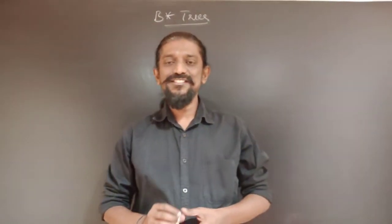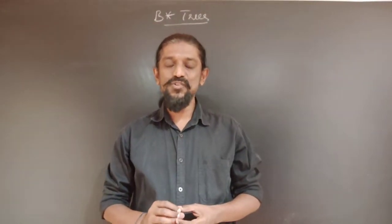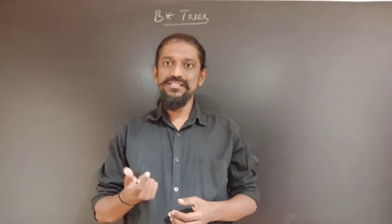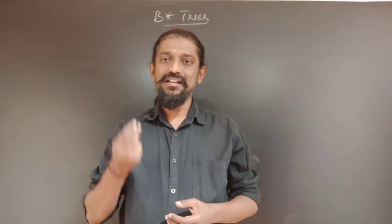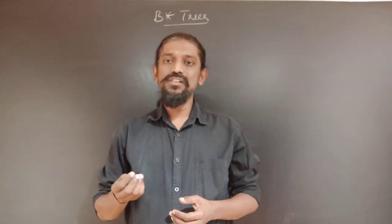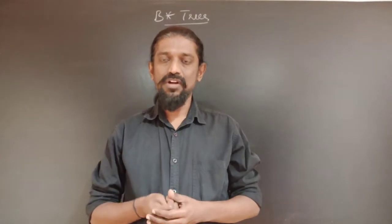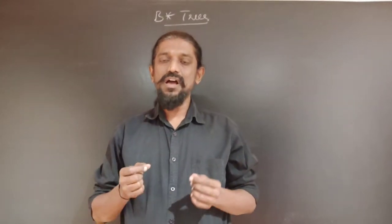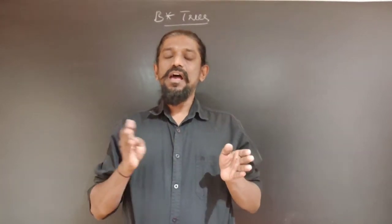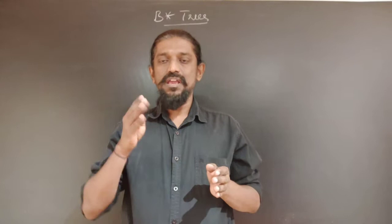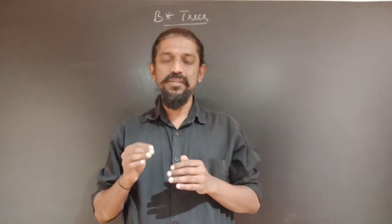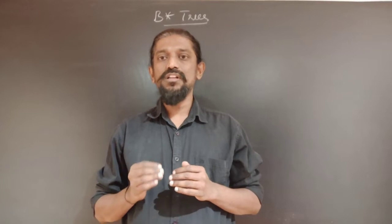Hello everybody, today let us discuss B-star trees. B-star trees are also an extension to the B-trees. If we recall what B-trees are, B-trees are multi-level, indexed, searched, fully balanced trees in which all the leaves will be at the same level. B-trees are multi-way search trees in which they can have M number of search paths, M number of descendants. The maximum number of search paths or descendants that a B-tree node can have is called the order of the B-tree.